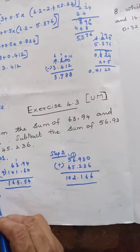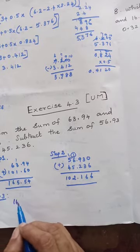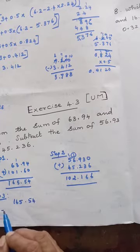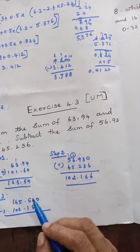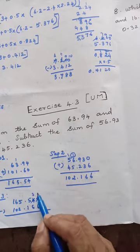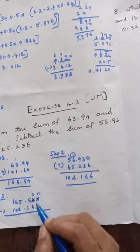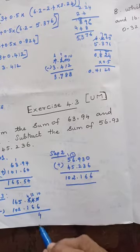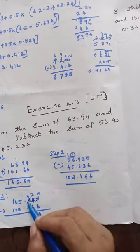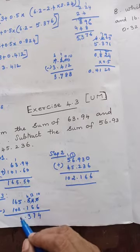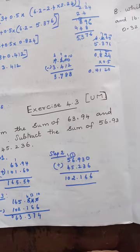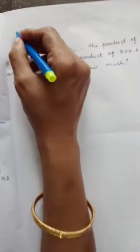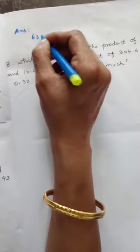Step 3: Subtract 102.166 from 165.54 (written as 165.540). From 0, borrow — it comes 10, 10 minus 6 is 4. 3 is not enough so borrow — 13 minus 6 is 7. 4 minus 1 is 3. 5 minus 2 is 3. Then 6 minus 0... the answer is 63.374.